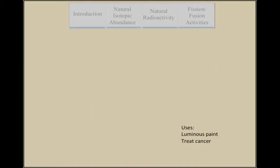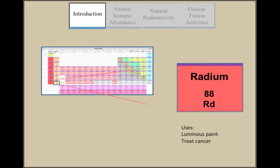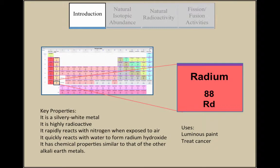Radium is an almost pure white alkali earth metal with atomic number 88. Similar to most second column elements, radium reacts quickly with nitrogen and water.